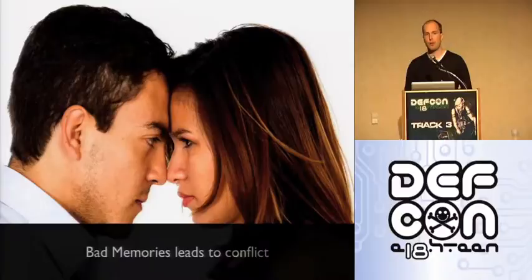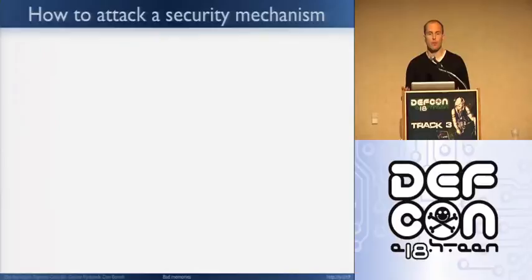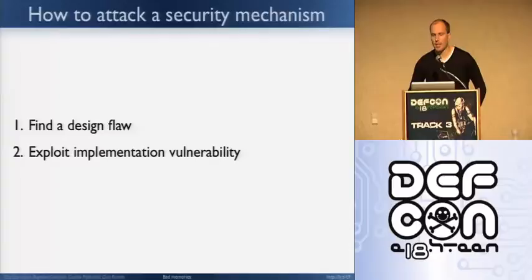The videos are on YouTube, so if you want to watch them afterward you can just browse the channel. Usually in security there are three ways to break a security mechanism. The first one is when you find a design flaw — for instance, web is broken by design. The second is the most well-known way: finding exploits and vulnerabilities in code — the implementation. The third one, which is the focus of this talk, is how you can try to make a security mechanism a little bit irrelevant.